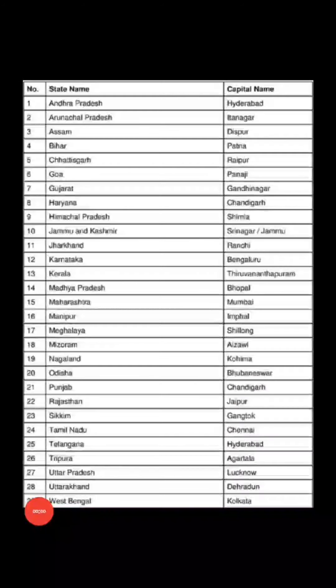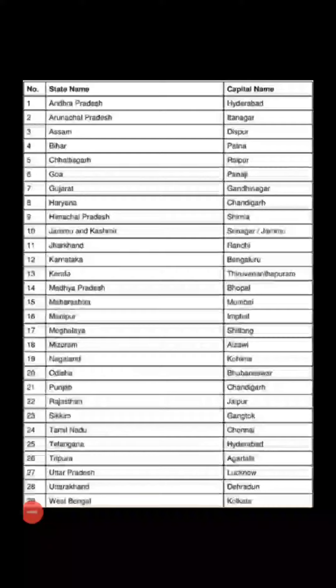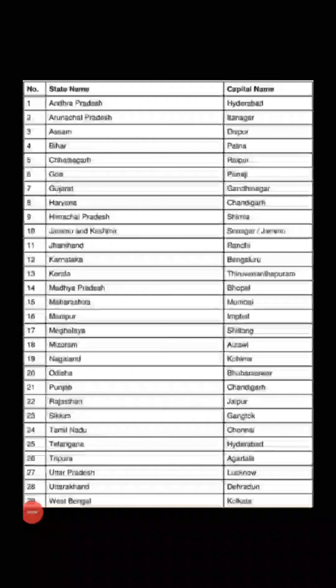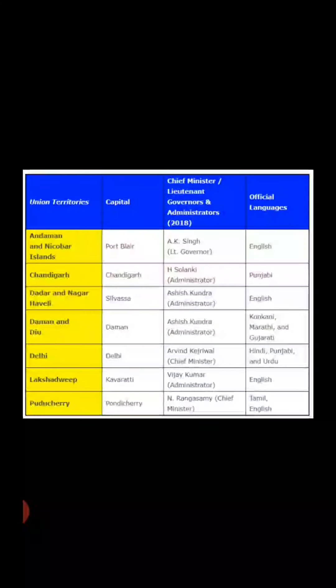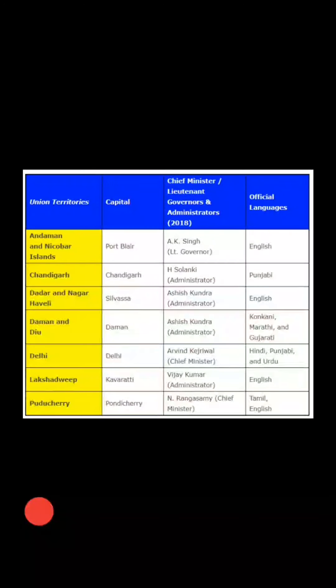So we can say that India is a democracy — it is a democratic country. India is the largest democracy in the world. Our country India has 29 states and seven Union territories, which are taken care of by the government.